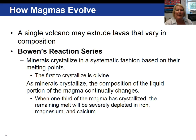Let's talk about magma evolution. A single volcano can extrude a variety of compositions of material. When we look at Bowen's Reaction Series, it shows that silicate minerals crystallize out in a systematic fashion depending upon their melting points. The first to crystallize is olivine, which is considered a high-temperature mineral. Once olivine — an iron and/or magnesium silicate mineral — is removed, the remaining liquid has a new composition; in other words, it has evolved.